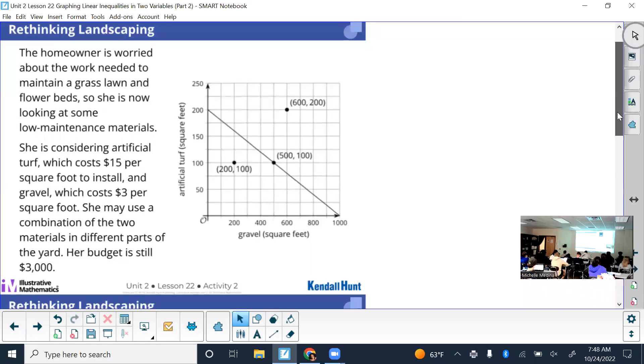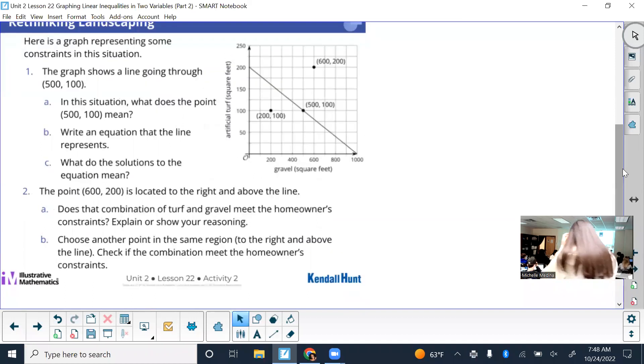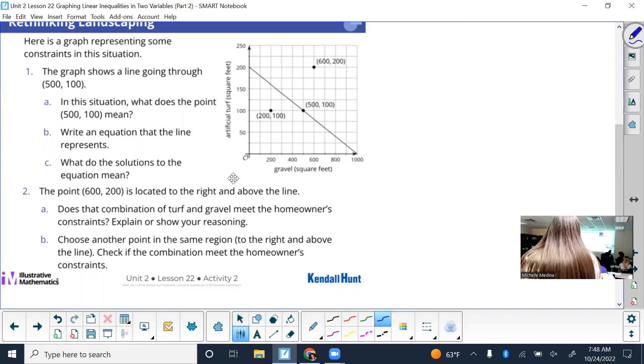All right, so given our time constraint, we're going to start going over it. So given the new constraints, what equation did you guys make? All right, if I heard you correctly, 3x plus 15y equals 3,000, and x being what this time? Gravel square feet. And then y would be artificial turf. If they give you a graph, that's really nice because then you can clearly see whatever is labeled on the x is that, whatever is labeled on the y is that.